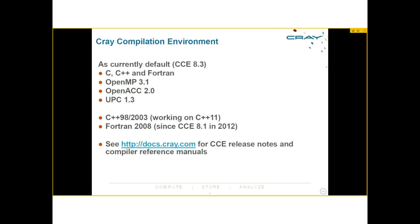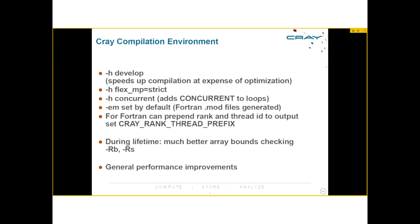The last topic is compilers. The current default on Archer is CCE 8.3, covering C, C++, and Fortran. It supports OpenMP 3.1, OpenACC 2 for accelerators, and UPC. This version is on the way to C++11, supporting C++98 and C++03. The Cray compilers have supported Fortran 2008 for a long time. Detailed release notes are available at docs.cray.com.